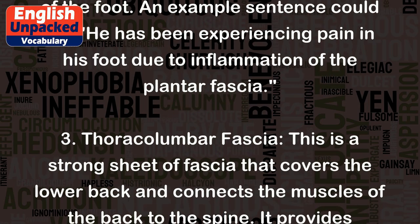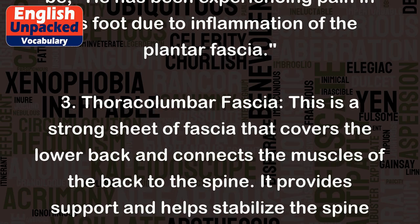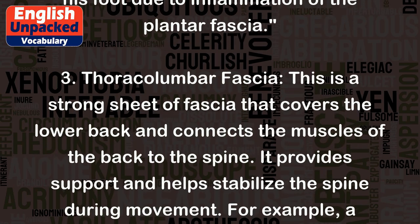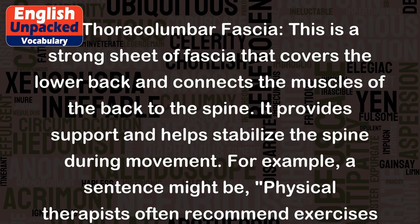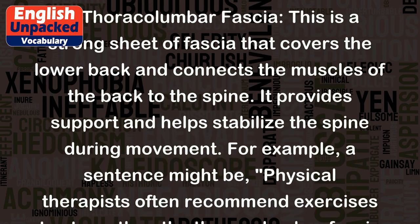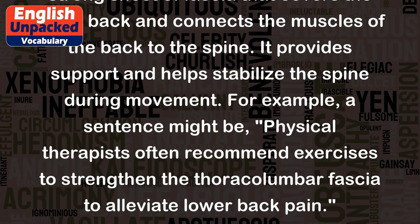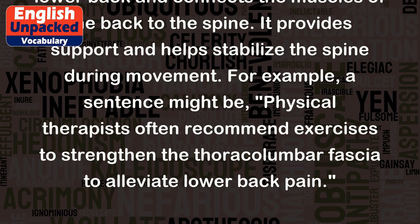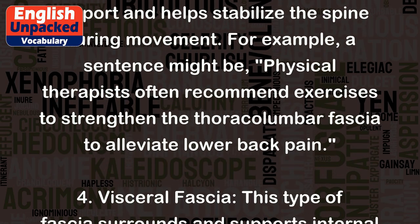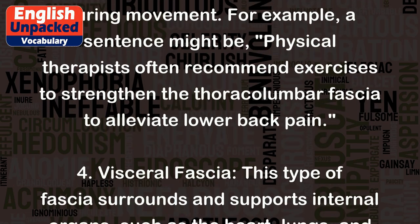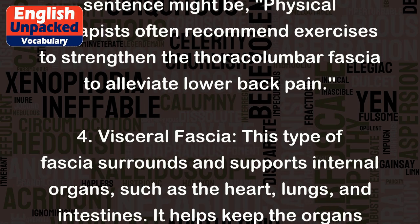3. Thoracolumbar fascia: This is a strong sheet of fascia that covers the lower back and connects the muscles of the back to the spine. It provides support and helps stabilize the spine during movement. For example, a sentence might be: physical therapists often recommend exercises to strengthen the thoracolumbar fascia to alleviate lower back pain.